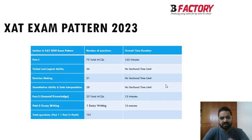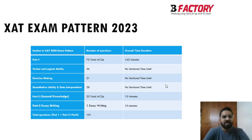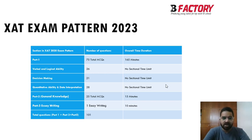One big difference compared to CAT is that in XAT there is no sectional time limit. You can move freely across the Verbal Ability, Logical Reasoning, Decision Making, and QA/DI sections during the exam. You can plan to give more time to weaker or stronger areas. General Knowledge gets 15 minutes separately, and essay writing gets an additional 10 minutes.